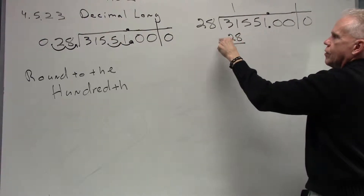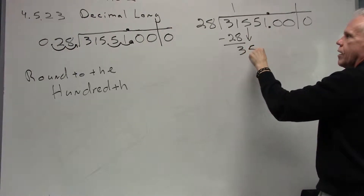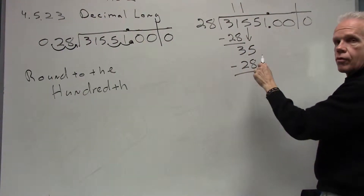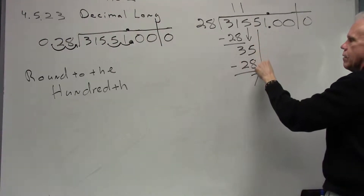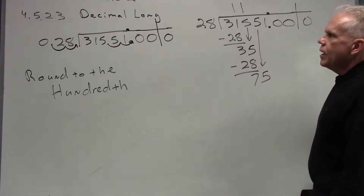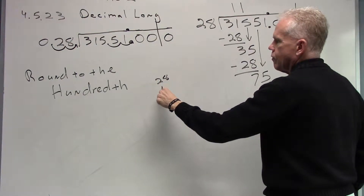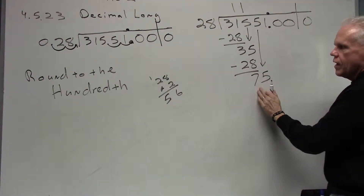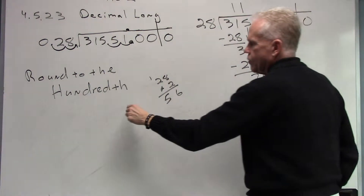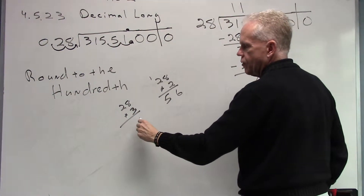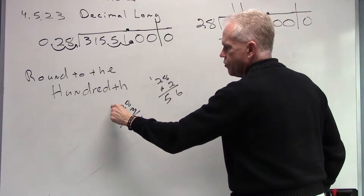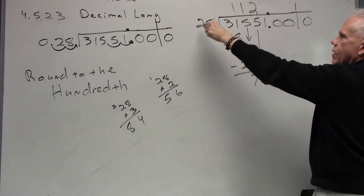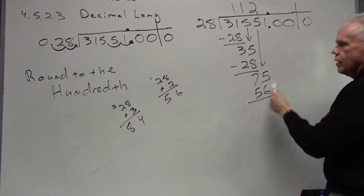Starting the division: 28 into 31 goes one time. 28, subtract, gives us 3. Bring down the 5 — 28 into 35 goes one time, 28. Subtract: 35 minus 28 is 7. Bring down the next 5 — 28 into 75. Not sure if that's two or three times, so let's check: 28 times 2 is 56, and 28 times 3 is 84. 84 is too much, so we go with 2.